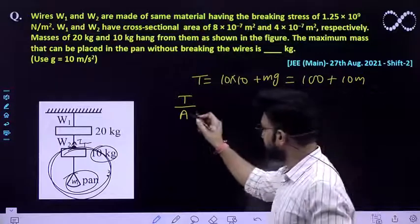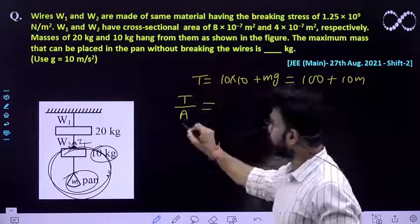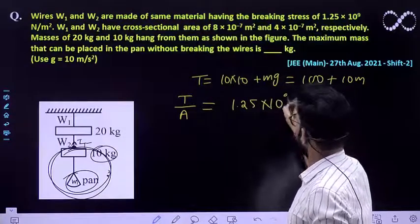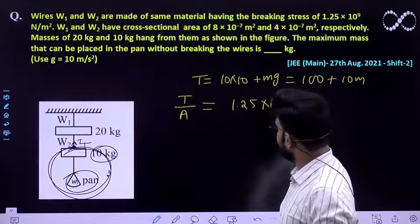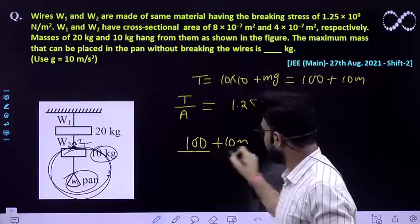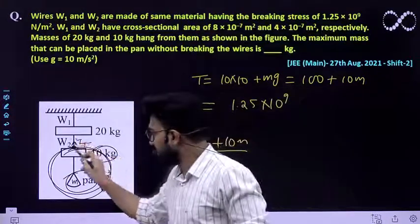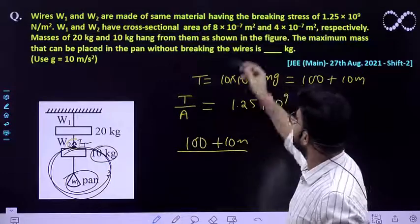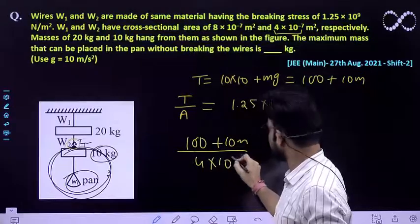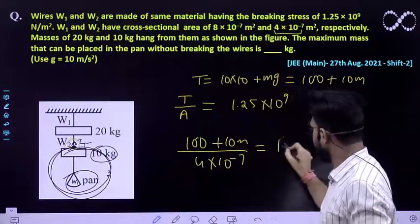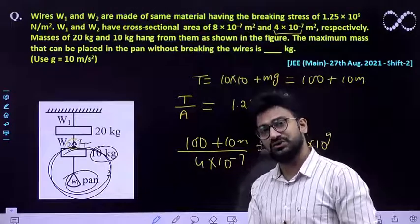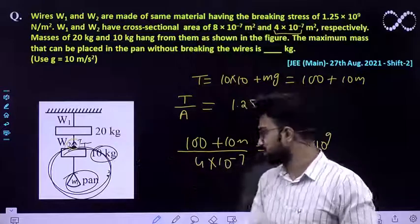We will be putting this value and this force per unit area is 1.25 into 10 raise to power 9. It would equal 100 plus 10m divided by area. What is the cross sectional area of the wire? It is 4 into 10 raise to power minus 7. We have to solve this equation to get the value of the mass.